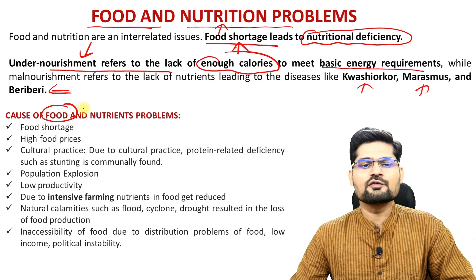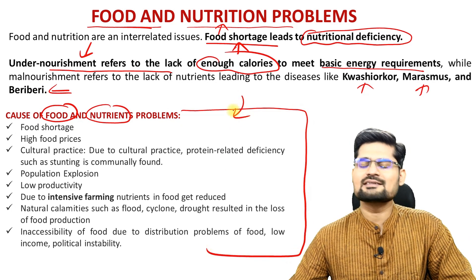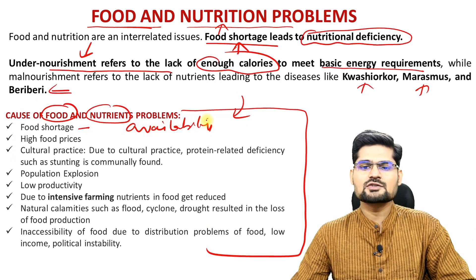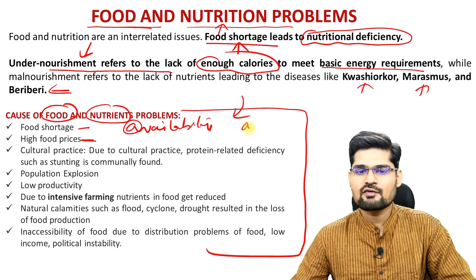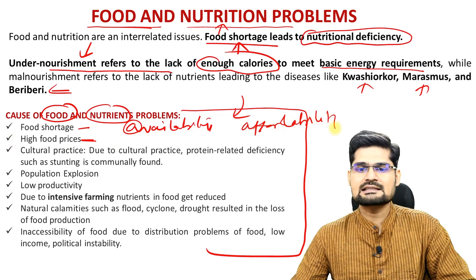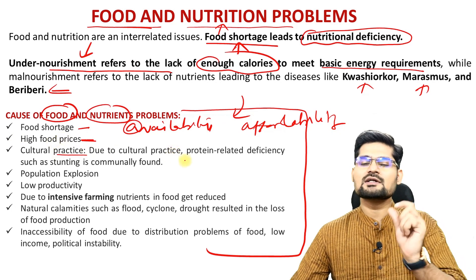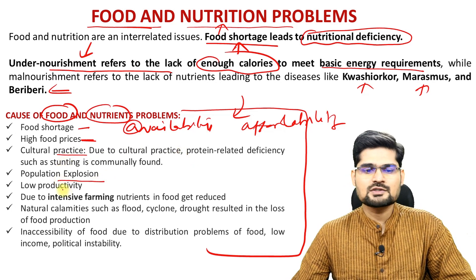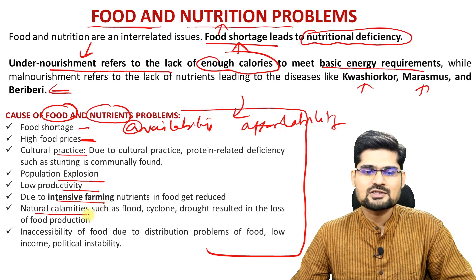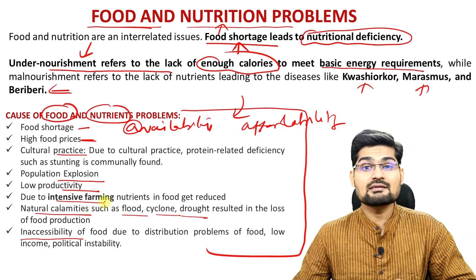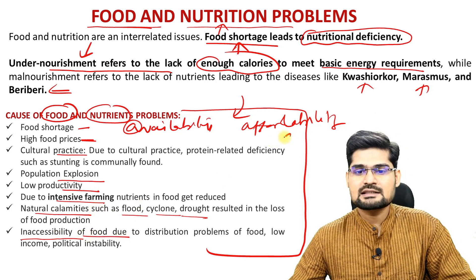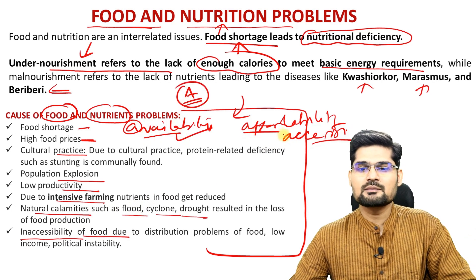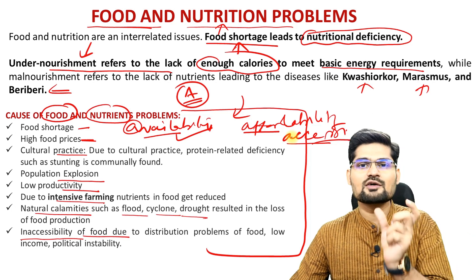Looking into food and nutrition problems across the world, there are several problems. Food shortage is simply related to availability — the first A. Food pricing is about affordability, which is the next A. Then cultural practices where, because of certain cultures and food habits, people don't consume enough protein. We also have population explosion, productivity, intensive farming, and natural calamities like floods, cyclones, and droughts. The third A is access. So the 3A concept here is availability, affordability, and accessibility as the three pillars of food insecurity.